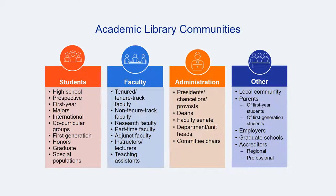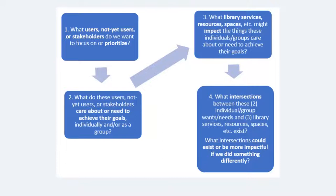Oftentimes the purpose of a library assessment begins and ends with users — that is, the purpose of assessment is to better serve a user group, and the results of the assessment are intended to fuel that better service. This chart identifies some large groups within an academic library community. Once a user group has been selected, often the second step is to learn more about what that user group needs or wants — what are their goals individually or as a group, and what do they care about in order to achieve those goals?